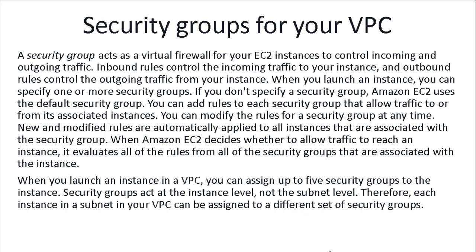Incoming rules control the incoming traffic to your instance and outbound rules control the outgoing traffic from your instance. When you launch an instance, you can specify one or more Security Groups. If you don't specify a Security Group, Amazon EC2 uses a default Security Group — by default in Amazon there is a Security Group called the default Security Group.